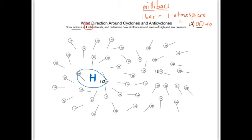We draw isobars in four-millibar intervals, so the next one down from 1028 should be a thousand and twenty-four. Let's find the twenty-fours and draw that line. You might ask how I knew which path to take — well, even where we don't have data, look at two adjacent stations showing 1028 and 1020. It has to be 1024 somewhere in between, so you can interpret where those lines should go even without data.